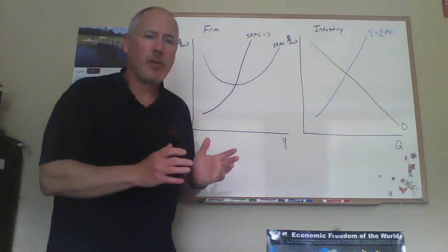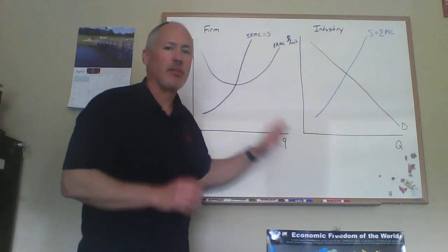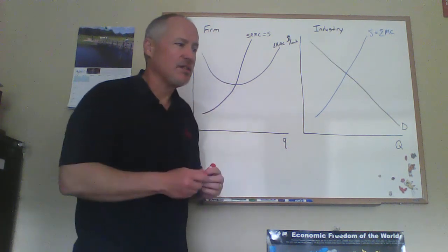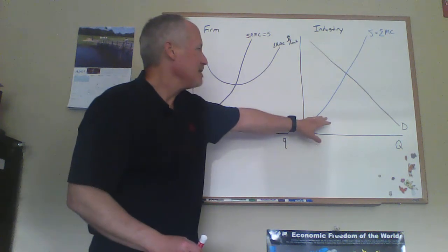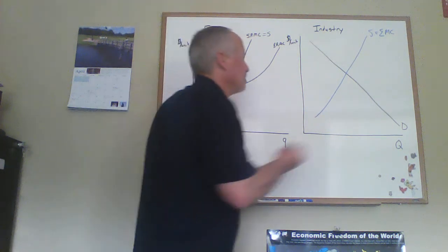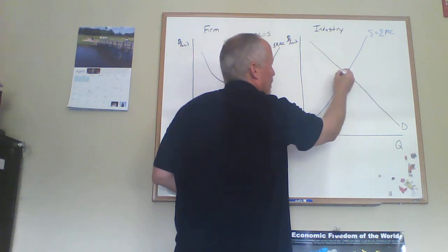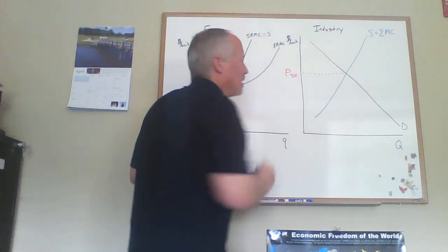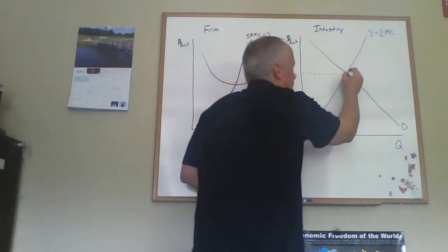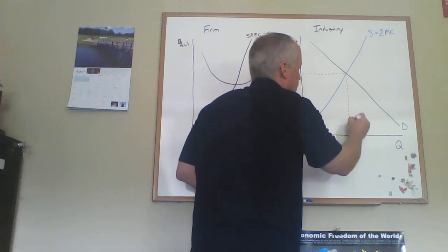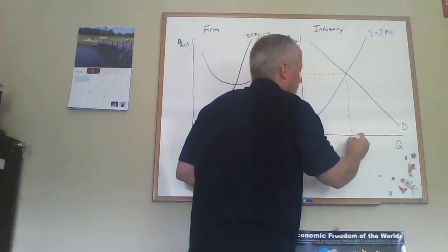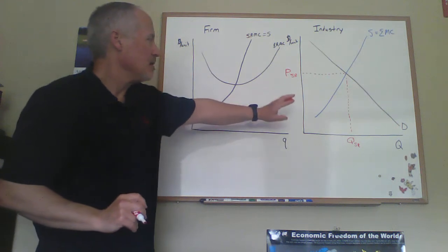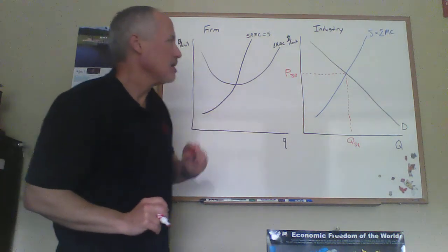Short-run equilibrium is determined in the industry diagram — it's just the intersection of supply and demand. We find where quantity supplied equals quantity demanded, or the market clears. We'll call that price P-SR, and that also gives us the quantity for the industry in the short run, Q-SR. That's the short-run equilibrium for the aggregate industry.